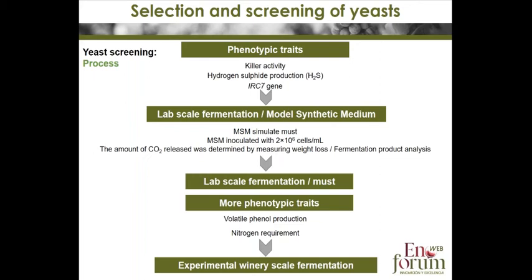Strains are screened to select the best candidates. We carry out various phenotypic and genotypic tests, including killer activity, hydrogen sulfide production, and the ability to produce the varietal thiol 4-MMP by studying the IRC7 gene. After that, fermentation capacity is assessed in a model synthetic medium and in grape must at lab scale.